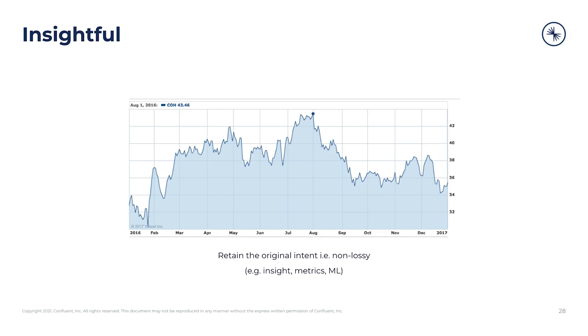The final advantage comes from collecting such detailed event-level data that it can be fed into an analytic system, whether for machine learning or for other types of analysis. To return to the shopping cart we used as an example in Module 2, using events to represent the cart gives an accurate, truthful record of a user's behavior. Just like the chess game from Module 1, we're tracking the whole game, not just the end state.